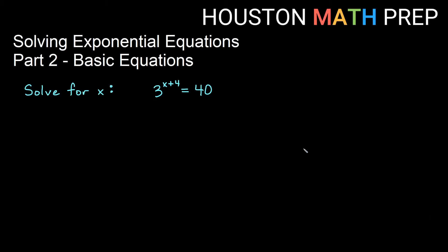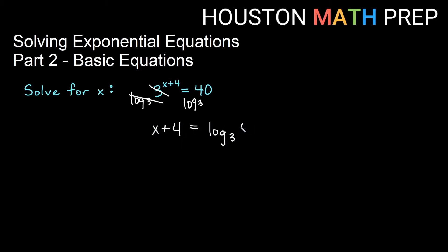Let's look at another one with an additional step, but a bit different. We have 3 to the x plus 4 — where x plus 4 is all in the exponent — equals 40. We work from the outside in when there are multiple layers of operations on x. The plus 4 is the most inside operation, so let's get rid of the outside operation first: base 3 exponential. We undo it with log base 3, and we get x plus 4 equals log base 3 of 40.